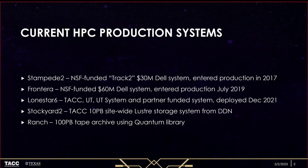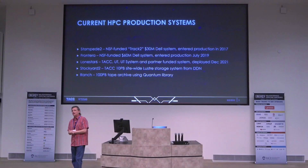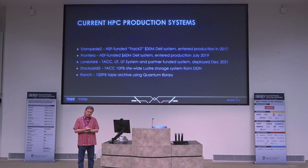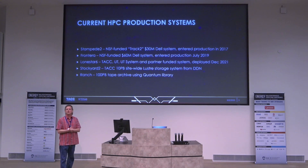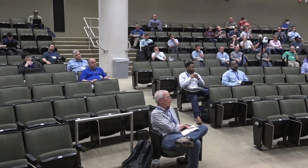I'm going to talk about our current production systems. We haven't added really any new systems this last year. The big one we've been focusing on is Lone Star 6, deployed in 2021, with about a year of production. We're still operating Stampede 2 — it's in its sixth year of operation, which is pretty long for an HPC system. We are struggling with hardware failures, mainly disk drives — our storage arrays are failing disks at a very high rate, much higher than expected.